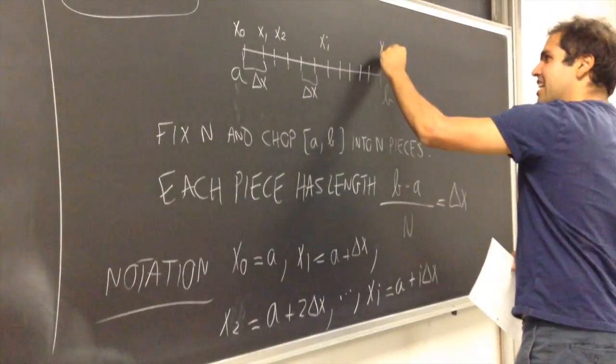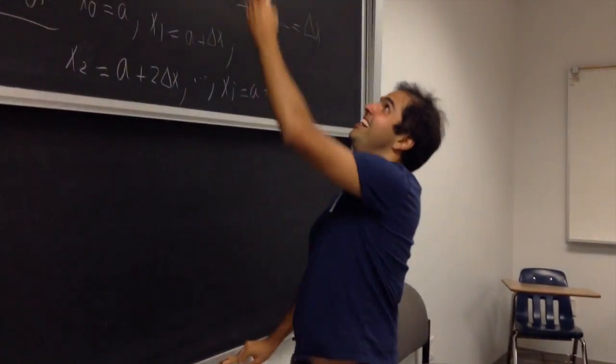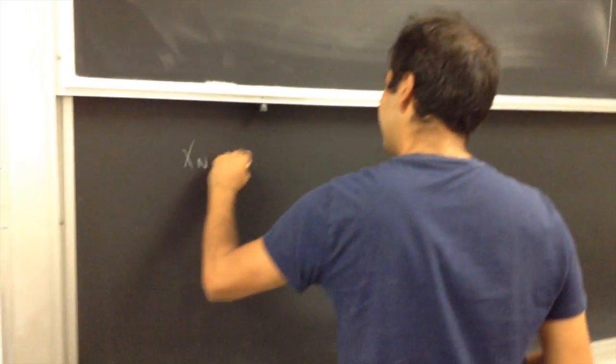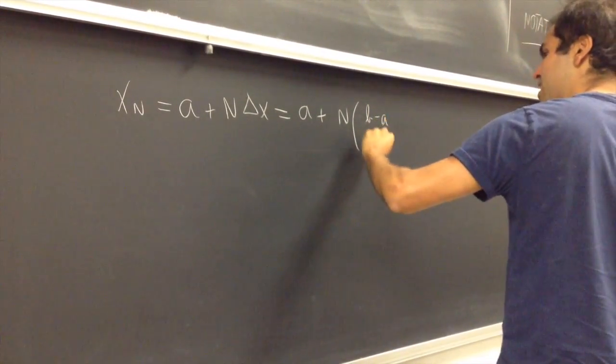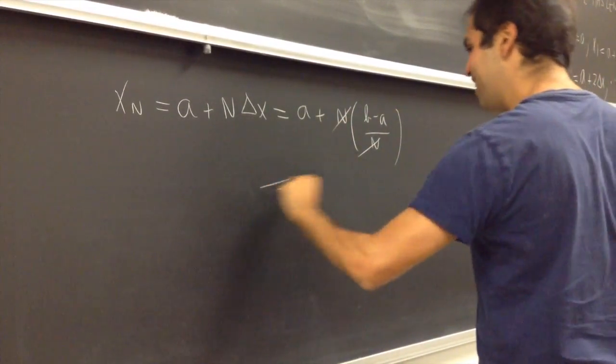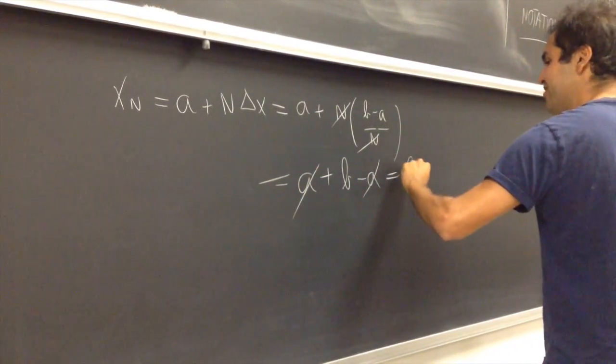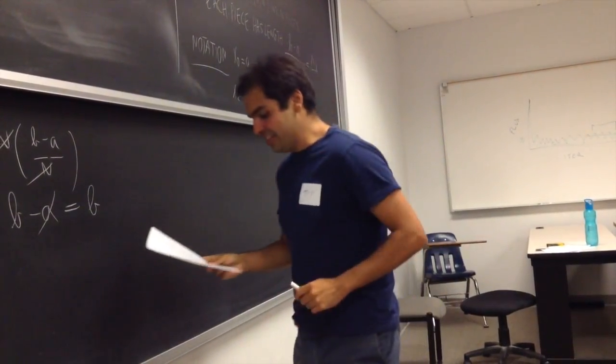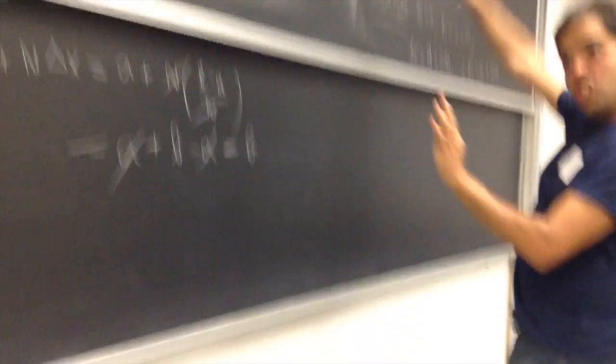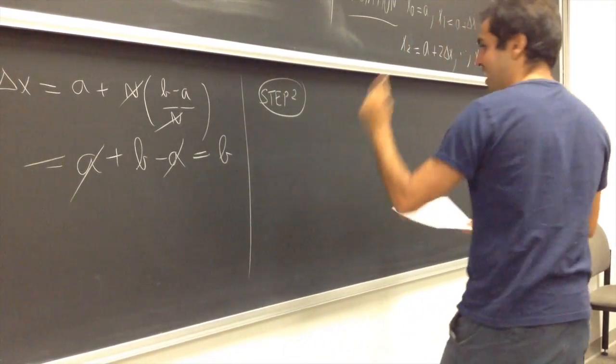And just as a sanity check, the last point, we'll call it xn. Let me show that the notation does work. Because what is xn? It's A plus n delta x. It's A plus N times B minus A over N. Cancels out, bang, bang, into the room. And then A plus B minus A. Cancel this out. And you, in fact, get B. So, the point is, the rightmost point actually corresponds to B. That's good news. That's the first thing. We chopped off the interval into N pieces.